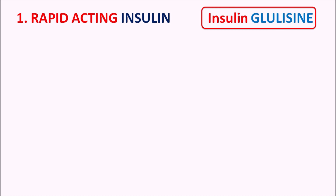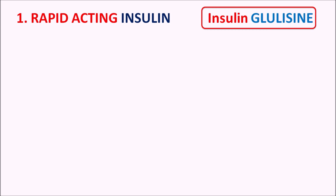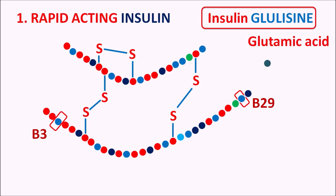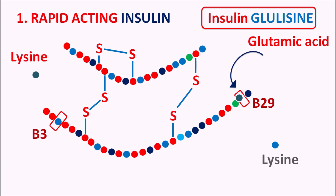The third rapid-acting preparation is insulin glulysine. Two modifications are made: at the B29 position, glutamic acid replaces lysine, and at the B3 position, lysine replaces aspartic acid. This is also a rapid-acting insulin that can be given 5 to 15 minutes before a meal.